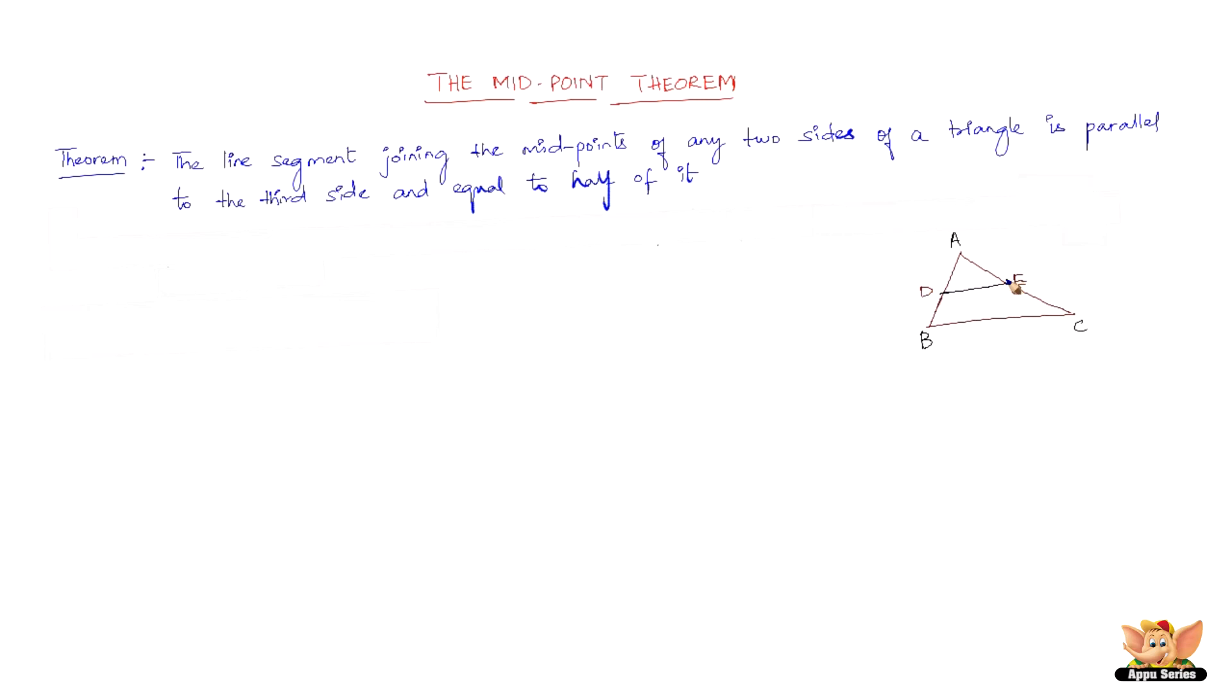Now if this happens, then DE is parallel to the third side, that is BC, and is also equal to half of the third side. So DE is equal to half of BC. If BC is 10 cm, DE is 5 cm. That is what the theorem states.